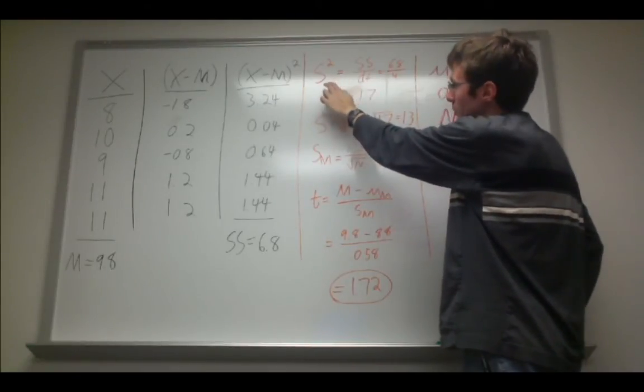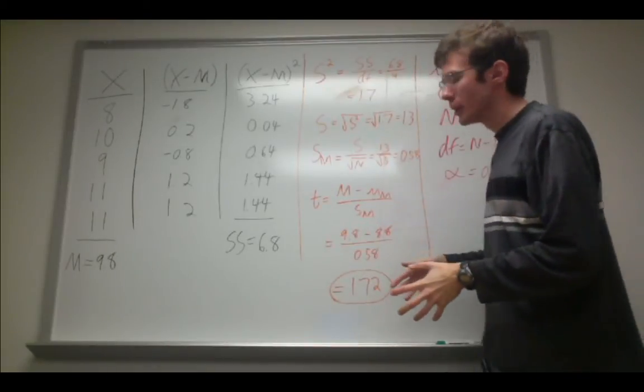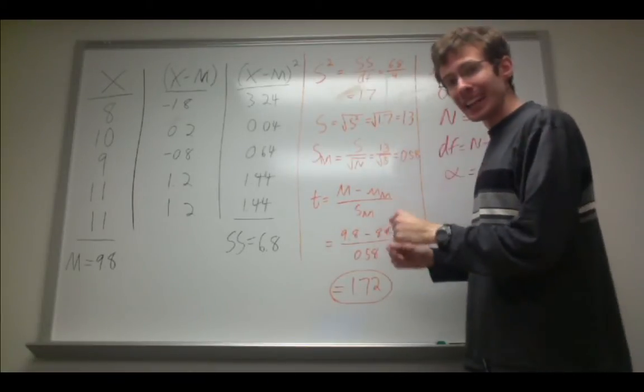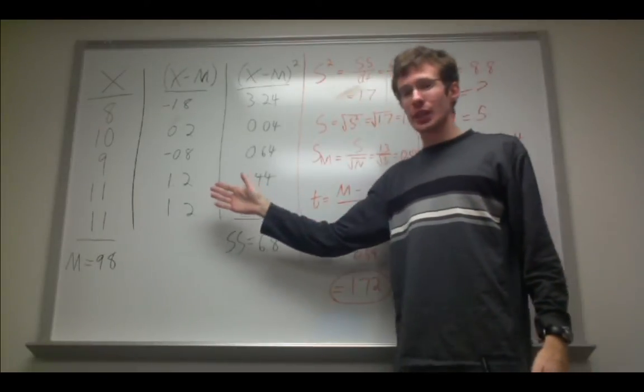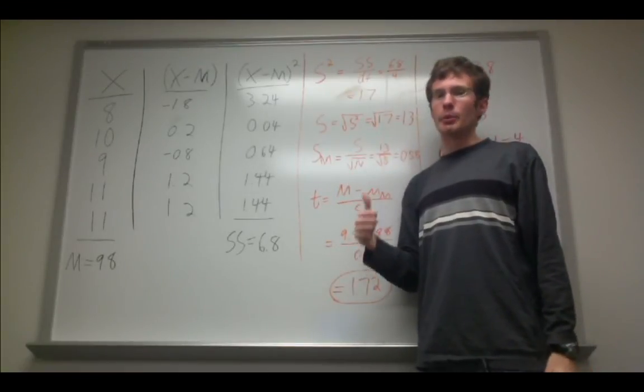Now here's where it gets different with t-tests as compared to z-tests. To estimate the variance of the population, we represent variance as s squared here. We take our sums of squares, but we don't divide it by n, because that's going to produce a biased estimator of the variance. I'm not going to get into it now, but if you want, there's a link to a video which explains why we do this. Instead, we divide by the degrees of freedom, which is simply the number of people in our sample, or n, minus 1. So in this case, degrees of freedom is 4, because we had 5 people. 5 minus 1 is 4. And we get a value of 1.7 for the variance, or s squared. Since we divide it by the degrees of freedom, this is an unbiased estimate of the population variance.